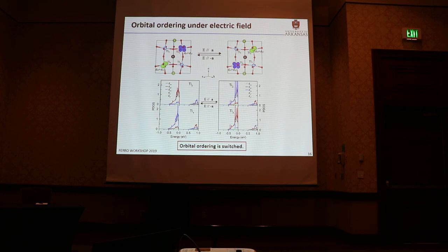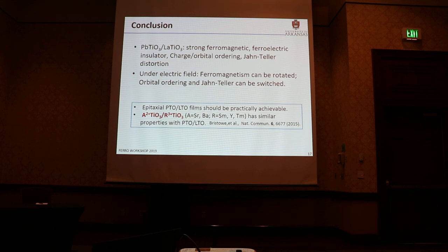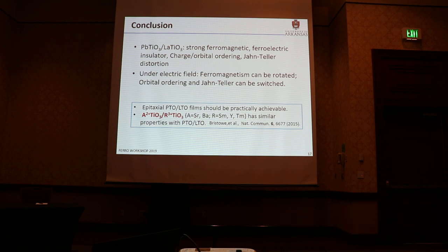In conclusion, this lanthanum titanate superlattice shows strong ferromagnetism, ferroelectric insulator behavior, charge ordering, orbital ordering, and Jahn-Teller distortion. Under electric field, the strong ferromagnetization, orbital ordering, and Jahn-Teller distortion can all be switched. Because of its lattice parameters close to commercial substrates, this can actually be achieved experimentally. Furthermore, this structure is very close to other known properties, so we project this can also be controlled by electric field. Thank you for your attention.